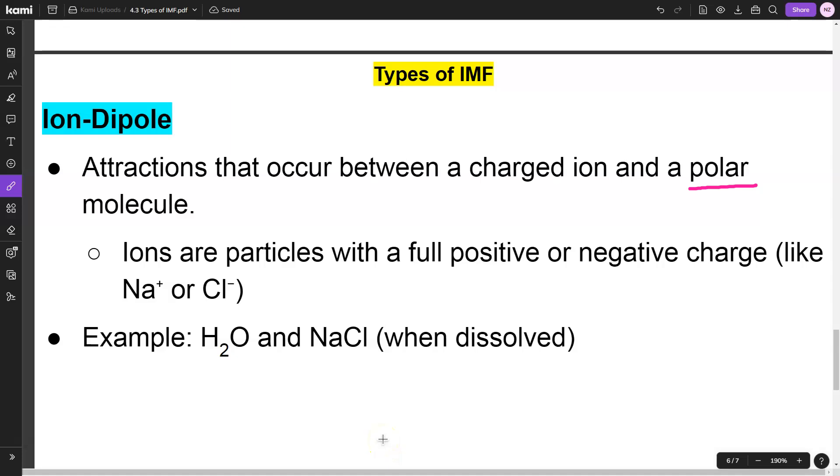If you recall, when you have an ionic compound such as sodium chloride, when it dissolves, it splits into its ions—positive sodium and negative chlorine. If you have a polar molecule like H₂O, those ions are going to be attracted. The positive ion will attract to the negative end of water and vice versa.